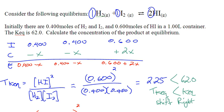We have an almost identically worded question, but notice the ratio is 1:1:2 — that's a huge deal. Initially you have 0.4 mol of each reactant and 0.6 mol of the product. Set up the ICE table — they're all gases, include them all. Plug in the initial values. You don't know which way it shifts, so calculate the trial Keq using the initial values. That gives 2.25, which is less than 62, so the trial Keq is too small and it shifts to the right to make more products.